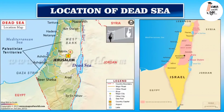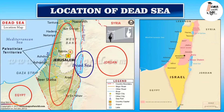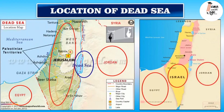A more close-up view: this is Egypt, this is Israel, and this is Jordan. So the Dead Sea is between Israel and Jordan. You can see in this also — Egypt, Israel, and Jordan. In between Israel and Jordan, this is the Dead Sea.